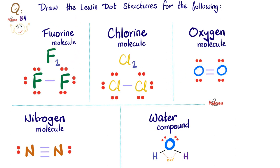Here are the answers. For the fluorine molecule F2: normally fluorine has 7 valence electrons. Each covalent bond represents two shared electrons, giving each fluorine atom 8 electrons — a complete octet. Chlorine is very similar, because both fluorine and chlorine are halogens. They exist in the same group, group 17, in the periodic table.